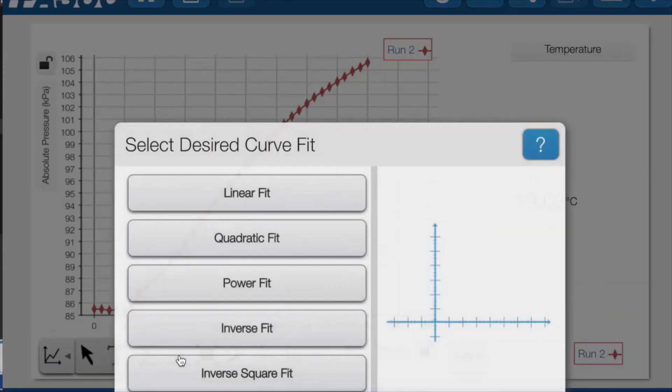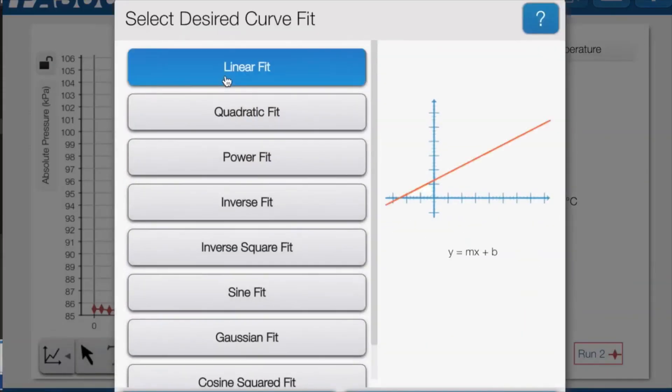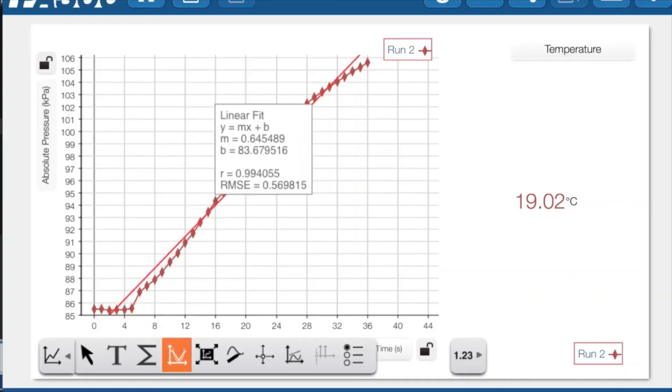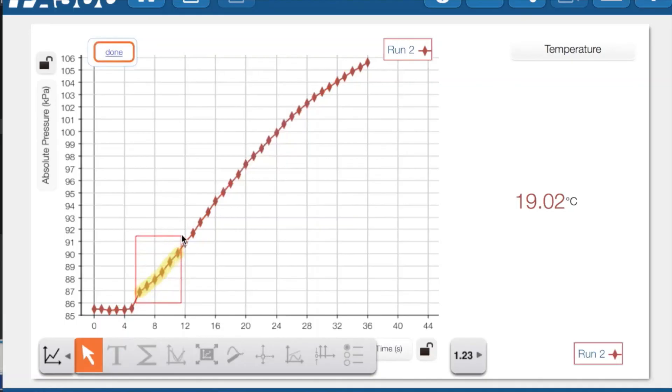In order to fit this you're first going to click on the fit function and choose a linear fit and then you'll want to use the select function to choose those points. The slope that you get from this linear fit line is going to be the rate of your reaction in kilopascals per second. So that's a rate that you can compare between your trials.